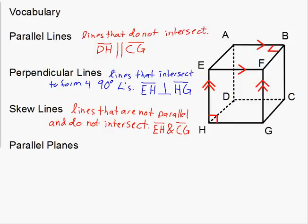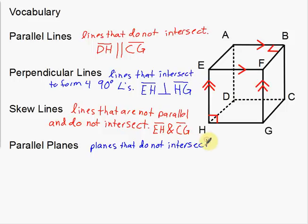Last but not least, we have parallel planes. Just like parallel lines, it's basically the same definition except we're talking about planes. Parallel planes are planes that do not intersect. A real-life example would be the top of a table and the floor — those are two planes that don't intersect and are parallel.